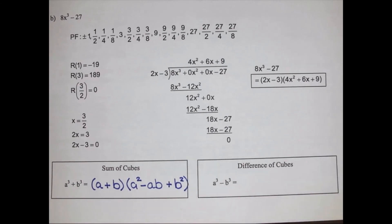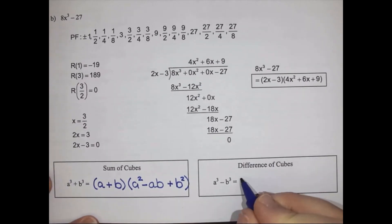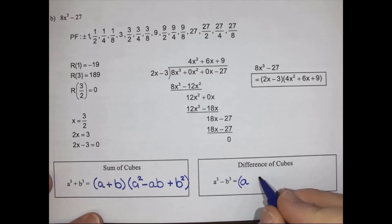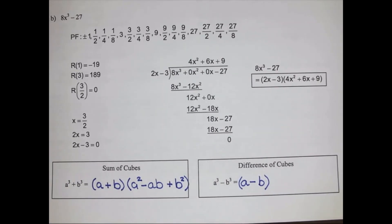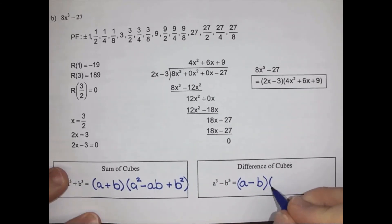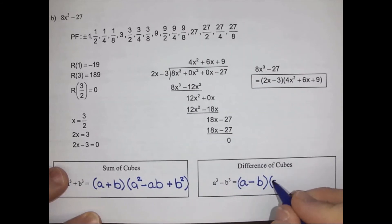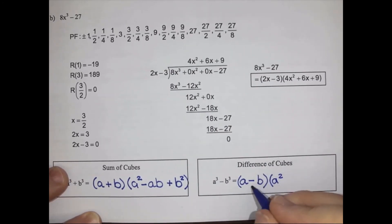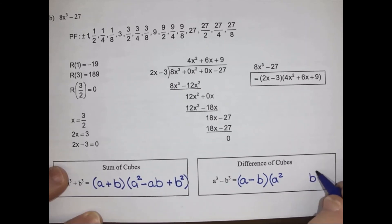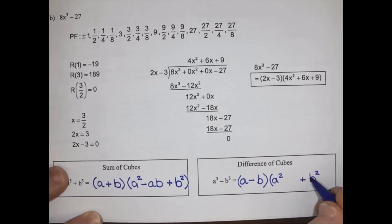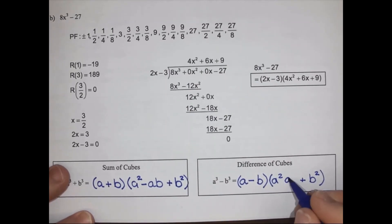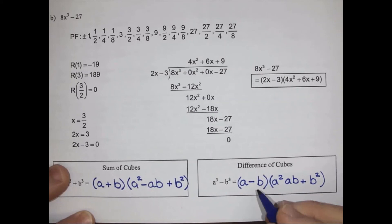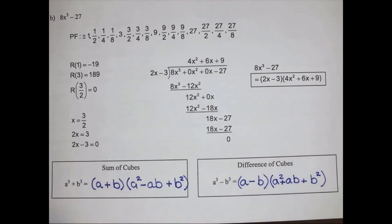The difference of cubes works exactly the same way, except the sign is different. I cube root the first term to get a, cube root the second term to get b, and match the sign that's already there, giving a minus b. In the second bracket, I square the first term to get a squared, square the second term to get b squared — positive because squaring always gives a positive — and then multiply a times b as ab, but with the opposite sign. Since the first bracket has minus, the middle term is plus ab.